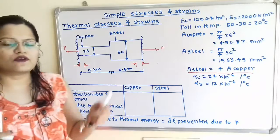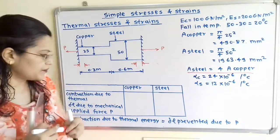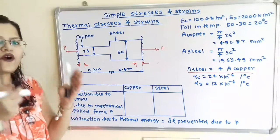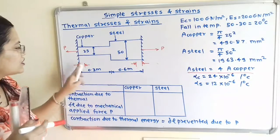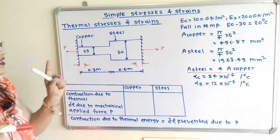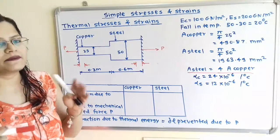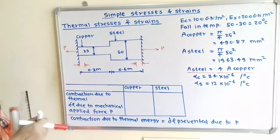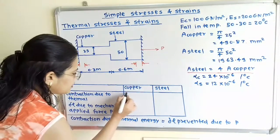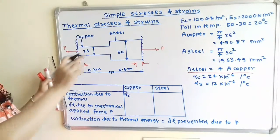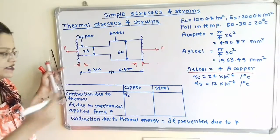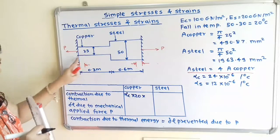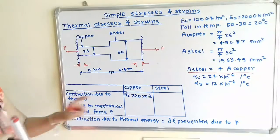We will prepare a table to find out the stresses developed due to the fall in temperature. First, we write the contraction due to thermal change, i.e., the fall in temperature. The formula is: contraction = α × ΔT × L (coefficient of linear expansion × change in temperature × original length). For copper: α_C × 20 × L_C = α_C × 20 × 0.3, giving 6·α_C.